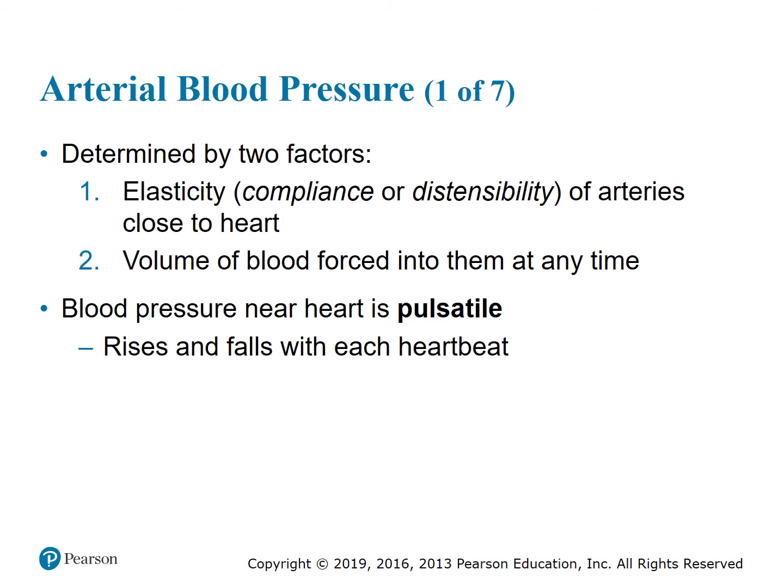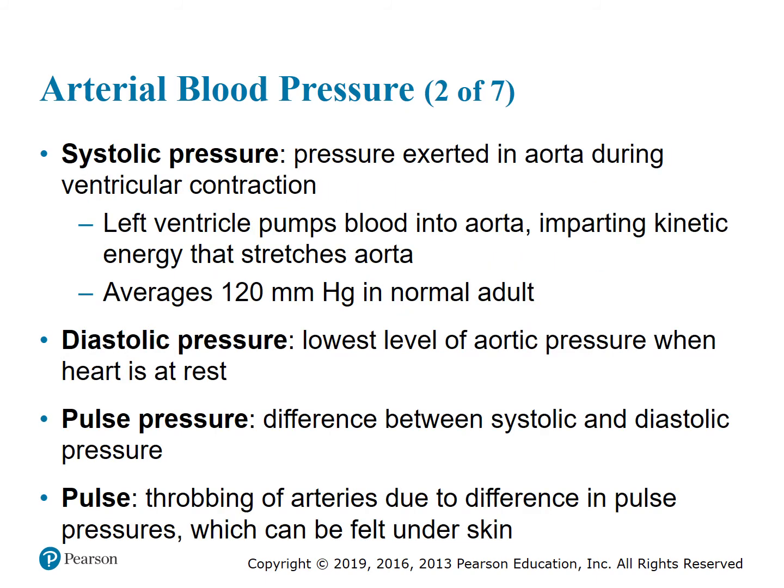Arterial blood pressure is determined by two factors: the elasticity (compliance or distensibility) of the arteries close to the heart, and the volume of blood forced into them at any time. Blood pressure near the heart is pulsatile, rising and falling with each heartbeat. Systolic pressure is the pressure exerted in the aorta during ventricular contraction — the left ventricle pumps blood into the aorta, averaging 120 mmHg in a normal adult. Diastolic pressure is the lowest aortic pressure when the heart is at rest, around 80 mmHg. Pulse pressure is the difference between systolic and diastolic pressure.